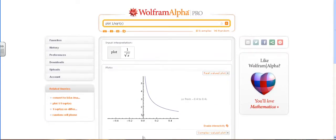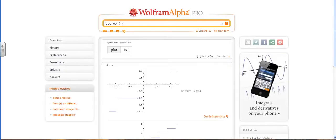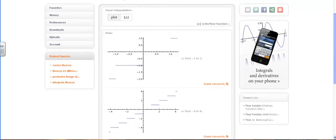To plot the greatest integer function, you use the word floor. Wolfram Alpha returns the plot of the greatest integer function.